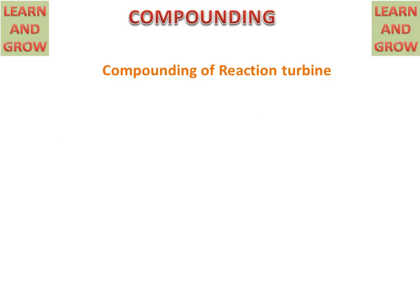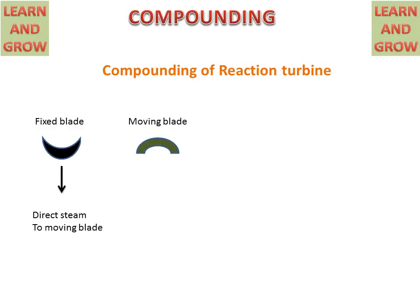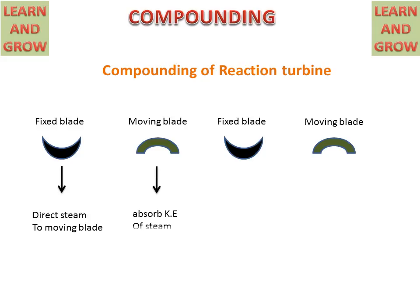In compounding of reaction turbine, blades are arranged in a specific manner. First we have a fixed blade which directs steam to the moving blade, then a moving blade, then fixed blade, moving blade — this is the arrangement. The moving blade absorbs kinetic energy of steam and decreases its velocity, while the fixed blade directs the steam to the next moving blade.